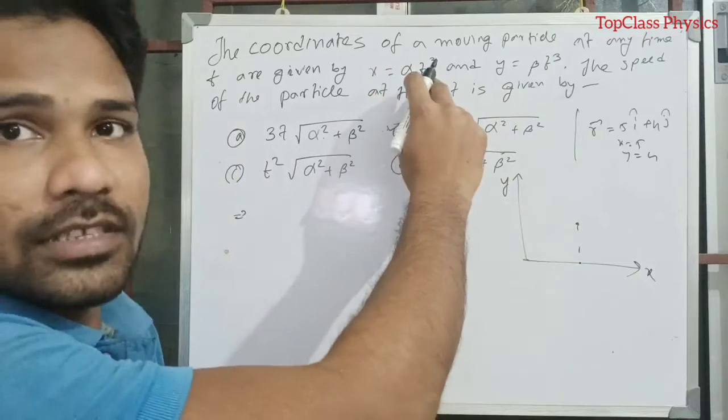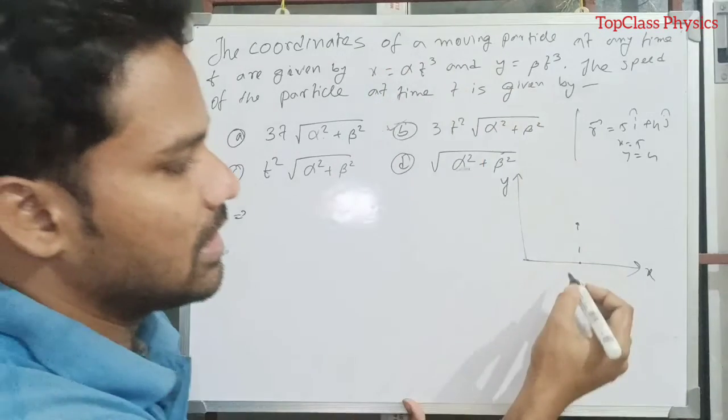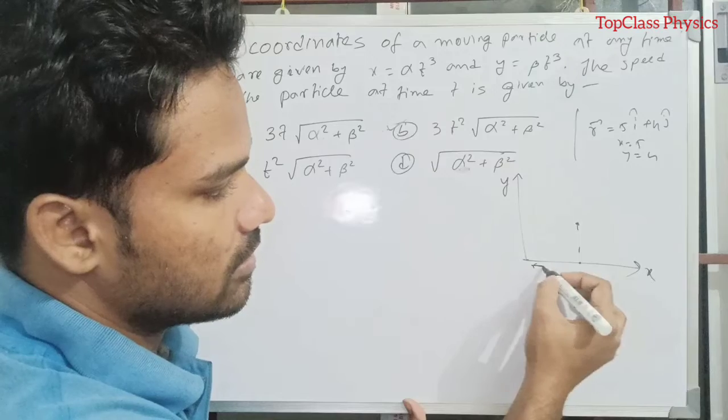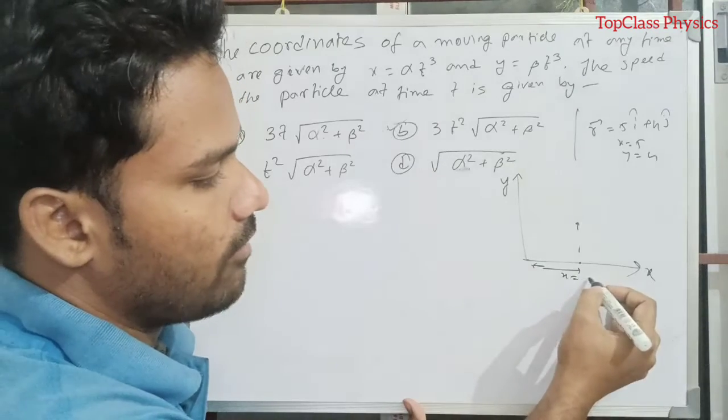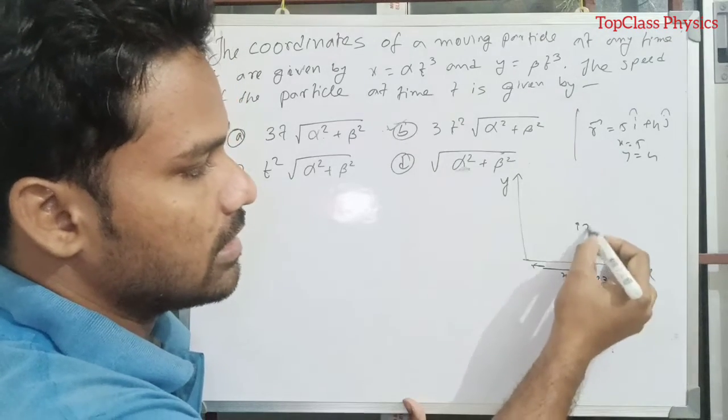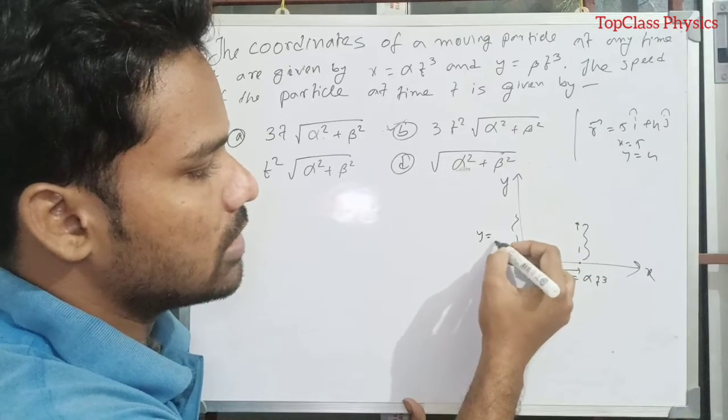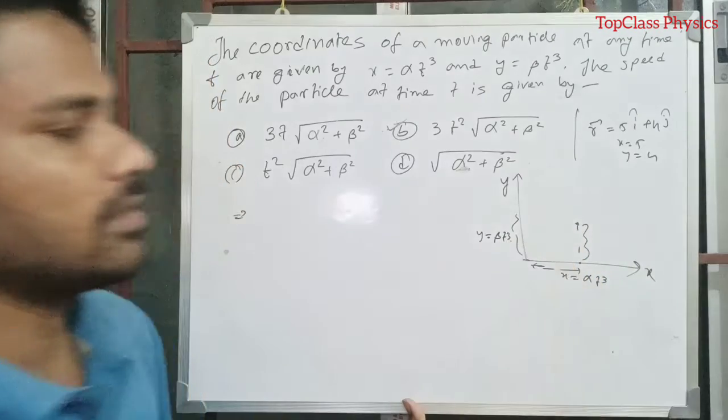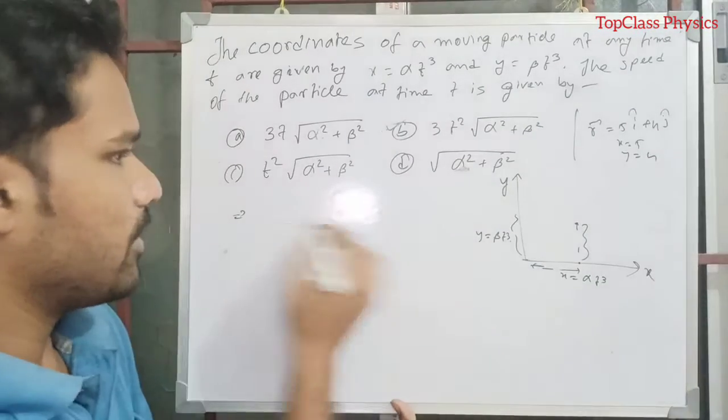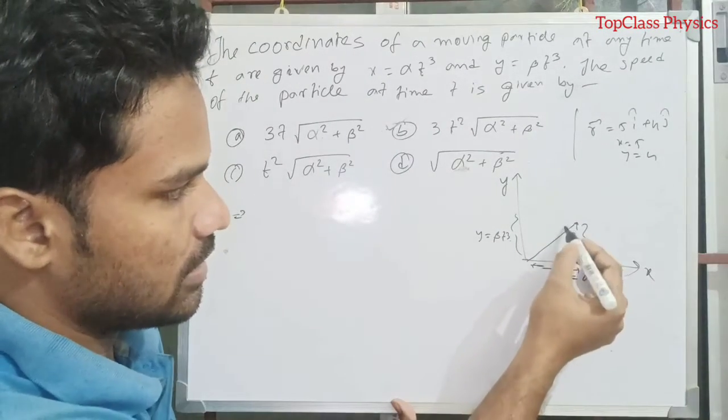Similarly, X position is here, that is alpha T cube. This is X, this is alpha T cube. And this is Y, this is Y equals to beta T cube. So you can easily find the position vector, say this is R.